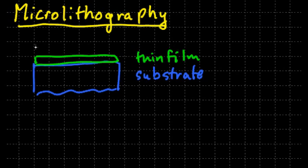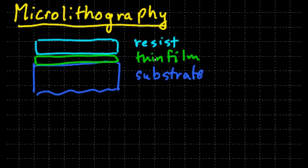And on top of the thin film, you have a layer, which is typically a polymer, called a resist. This is a cross-section, so from the top down, there's really not much to see. You would just see the resist on the thin film.